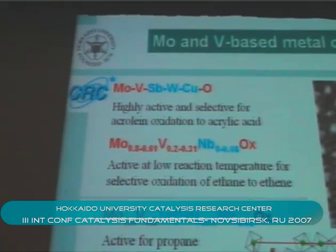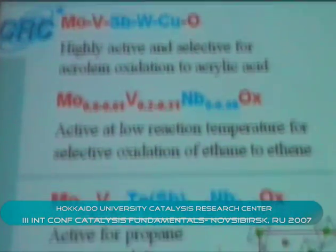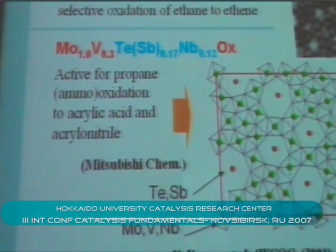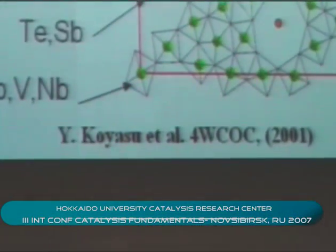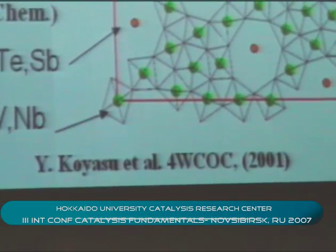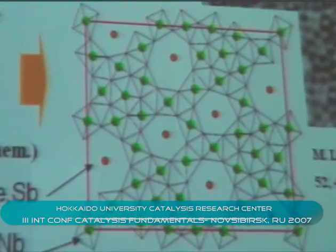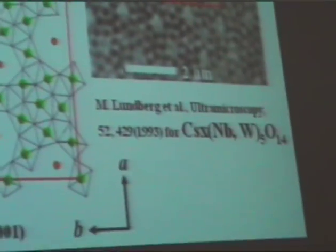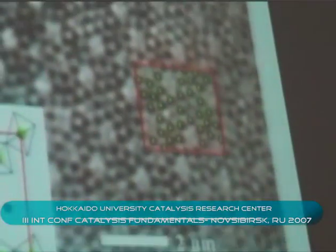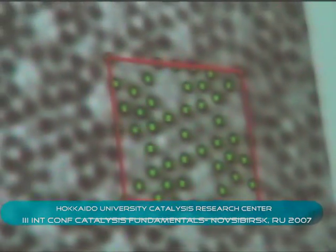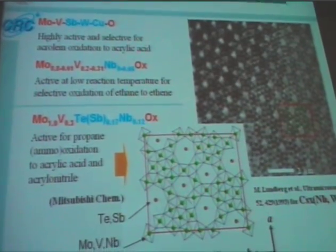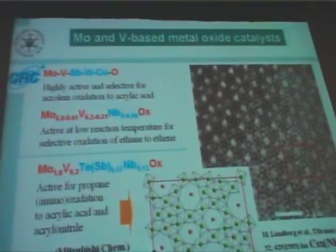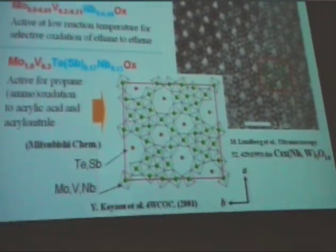Which ultimately create high-dimensional functions in terms of catalysis. As Professor Parov pointed out, molybdenum vanadium is a very important catalytic element in selective oxidations. There are many examples. The most typical one is the molybdenum vanadium oxide, which is for acrolein oxidation to acrylic acid, and which is commercialized in the industry. The performance is extremely high — giving more than 95% yield of acrylic acid. So this is the mixed oxide.